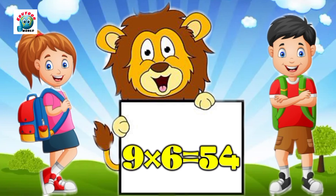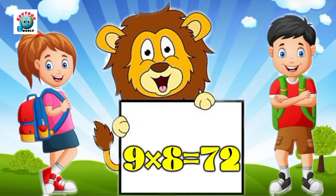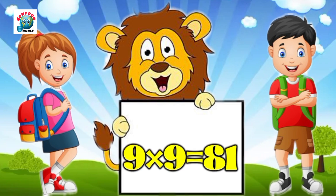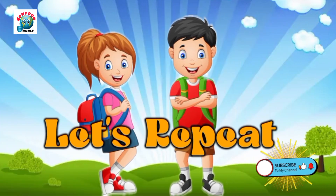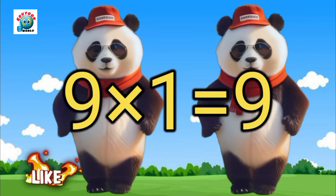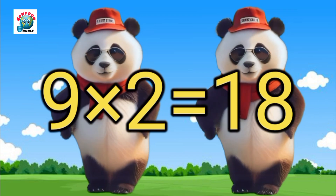Nine sixes are fifty-four. Nine sevens are sixty-three. Nine eights are seventy-two. Nine nines are eighty-one. Nine tens are ninety. Let's repeat. Nine ones are nine. Nine twos are eighteen.